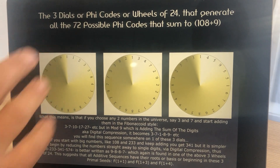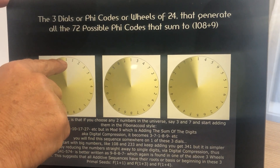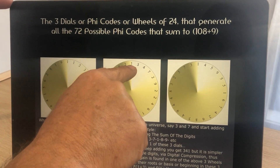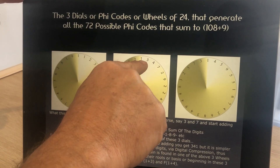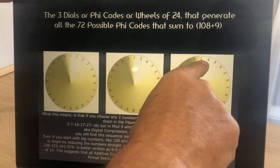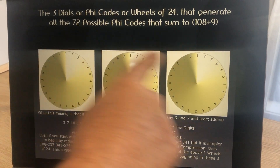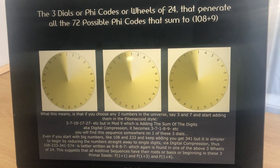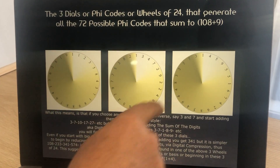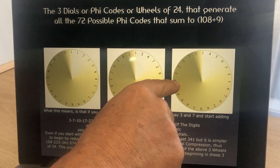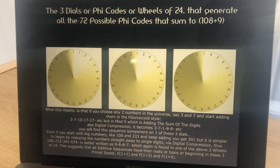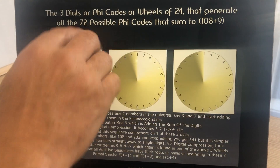What's important about these three dials is that the first one starts with 1 and 1, giving 2 — we call this F(1+1). The second Phi Code goes 1, 3, 4, 7 — the seed is 1 and 3, so we call it F(1+3). The third is F(1,4): 1 and 4 make 5. So each dial produces completely different numbers. If your seed numbers were 4 and 7, they would produce one specific wheel of 24 digits that adds up to 108. Starting with 8 and 3 produces another, repeating after every 24 digits.